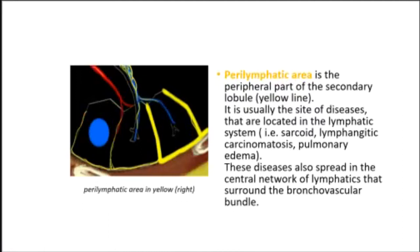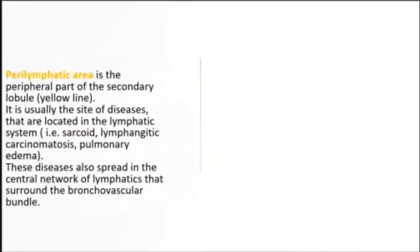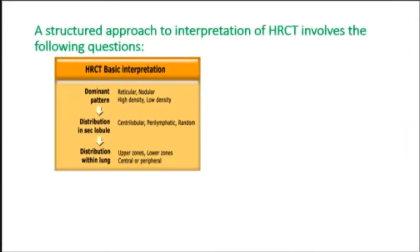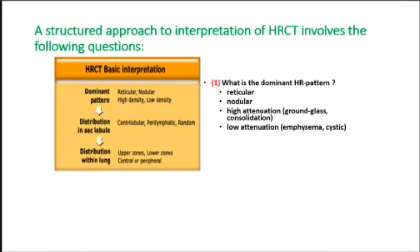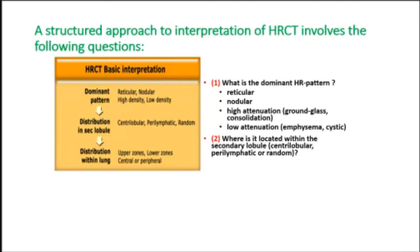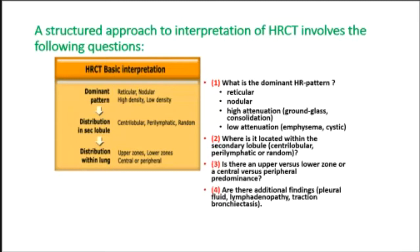A structured approach to HRCT interpretation involves the following questions: one — what is the dominant HRCT pattern (reticular, nodular, high attenuation/ground glass/consolidation, or low attenuation/emphysema/cystic)? Two — where is it located within the secondary lobule: centrilobular, perilymphatic, or random? Three — is there upper versus lower zone or central versus peripheral predominance, and what are the additional findings?